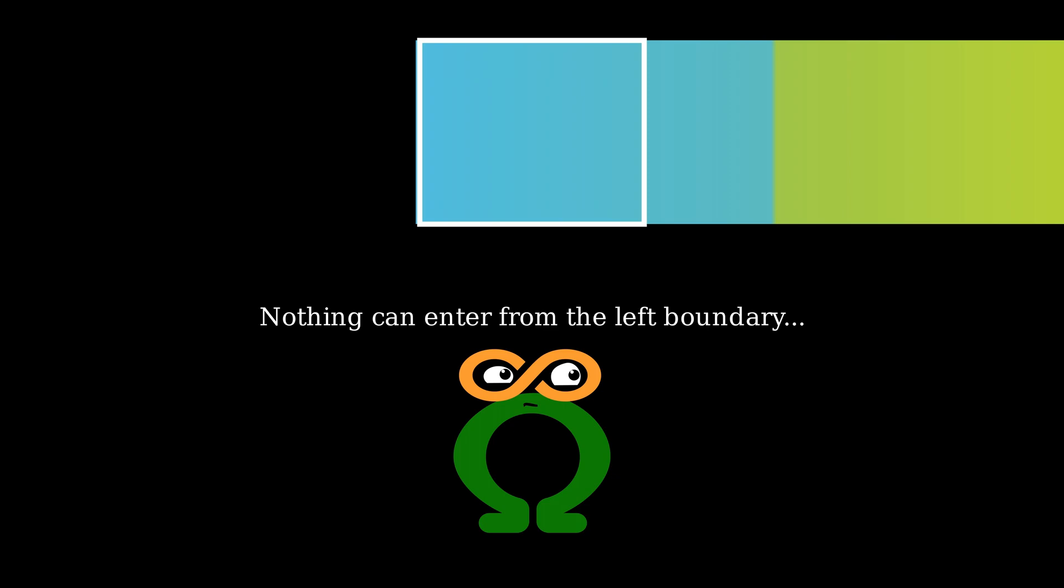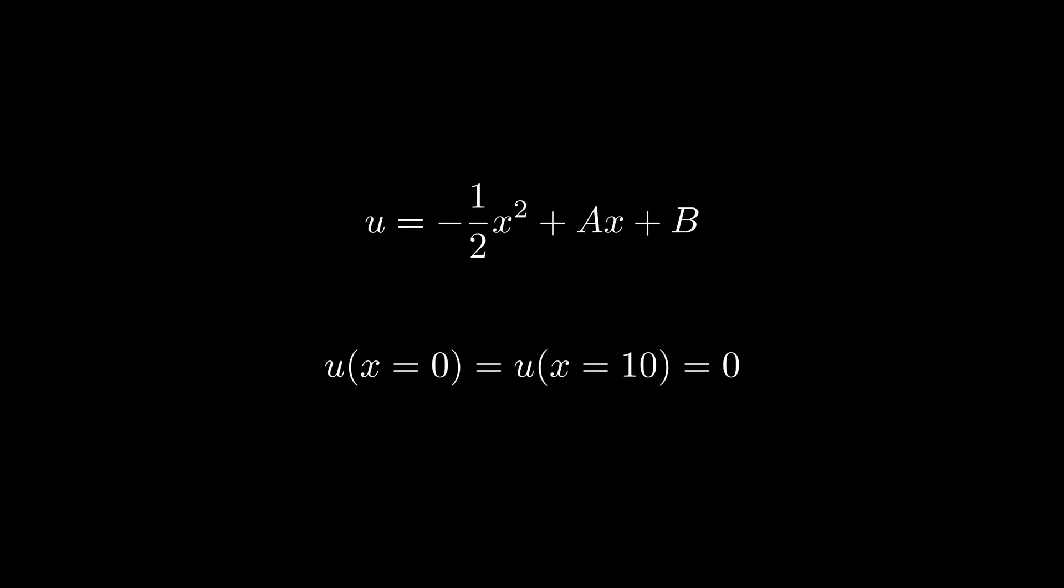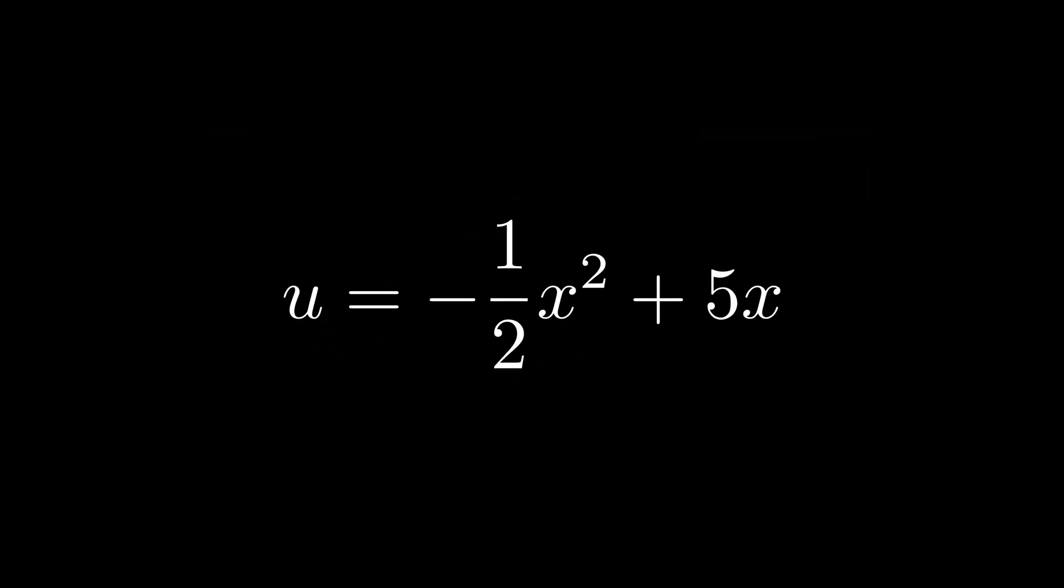Boundary conditions are a part of the problem that we're trying to solve. It could be something as simple as saying let's just put the two ends on an infinite block of ice such that the temperature at the two ends is always zero. Finally, we can use these two equalities to get a and b.